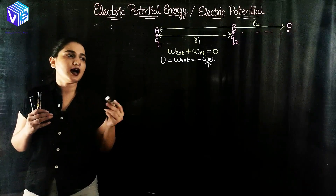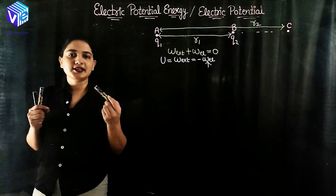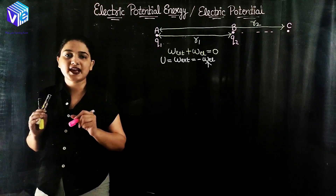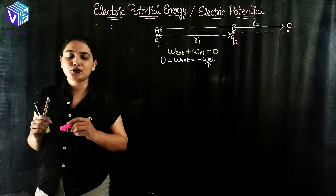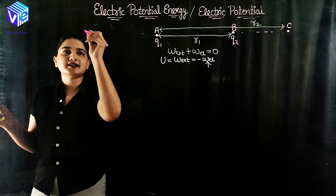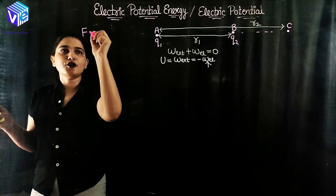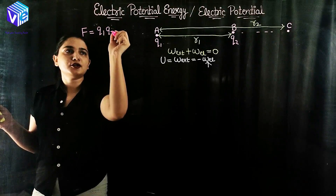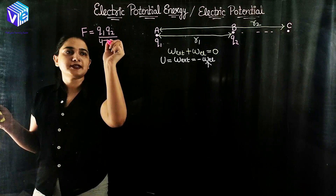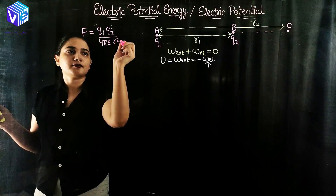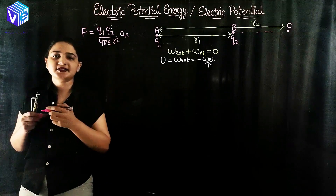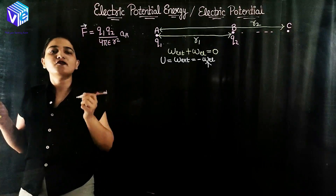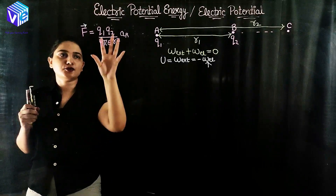Now we'll derive how to calculate the electric potential energy. We discussed Coulomb's law in the previous video — I recommend you watch that first. The force according to Coulomb's law is equal to Q1·Q2 upon 4πε·r², and the direction of the force is represented by â_r.